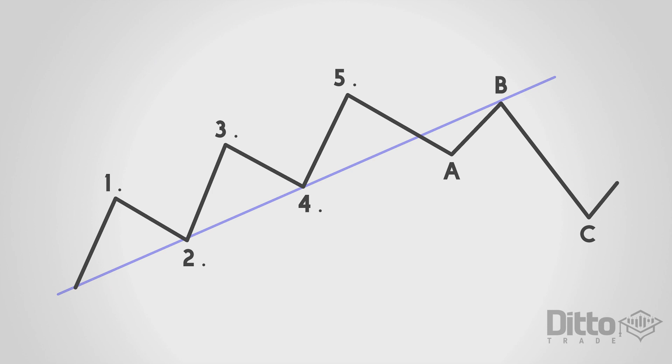Trends show the main direction of prices while corrections move against the trend. These examples are two waves that represent both movements. Let's now take a closer look into the impulse and correction waves.